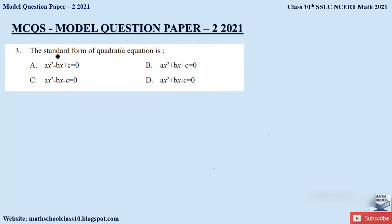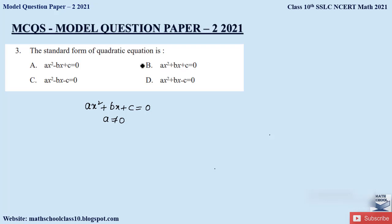Question 3: What is the standard form of a quadratic equation? The standard form is ax² + bx + c = 0, where a ≠ 0. All the options look similar but with different signs, so make sure you select the correct option. The correct answer is option B: ax² + bx + c = 0.